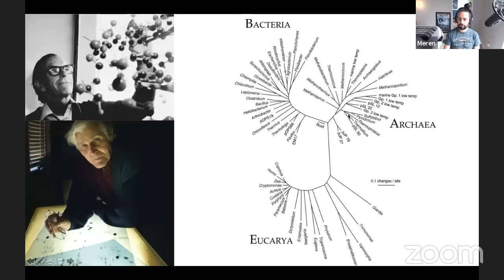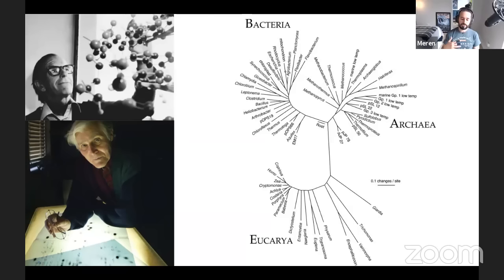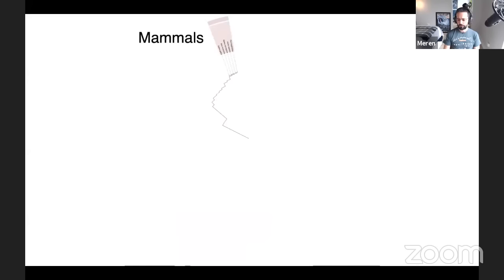Carl Woese put together a tree of life for the first time using ribosomal RNAs, placing all members of life in a single tree. The major finding was that life was not simply prokaryotes versus eukaryotes — he could see a distinct third branch. When we retire the term 'prokaryotes,' we realize there is more to life than a single clade. So he discovered the Archaea — a third domain of life — in addition to Bacteria and Eukarya.